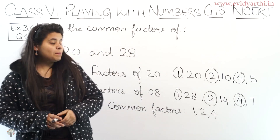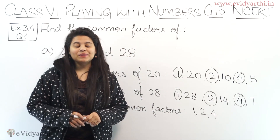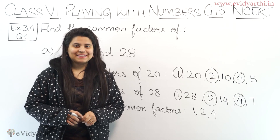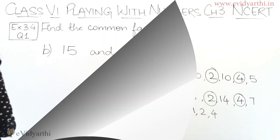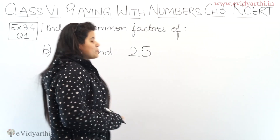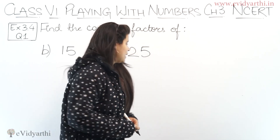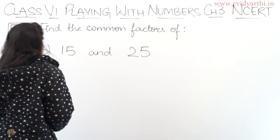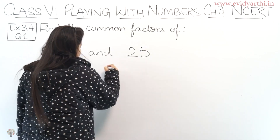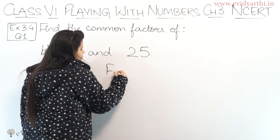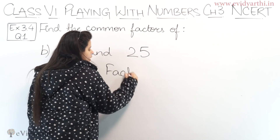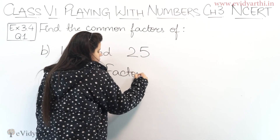So that was Part A. Let's come to the next part — Part B. The numbers given are 15 and 25. First, we will write the factors of 15.